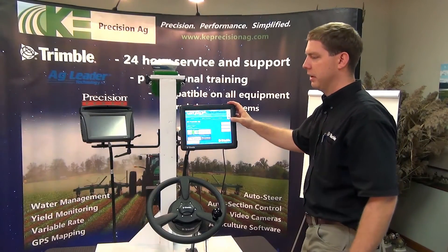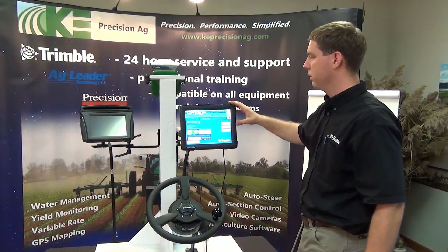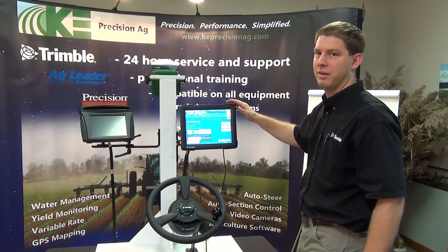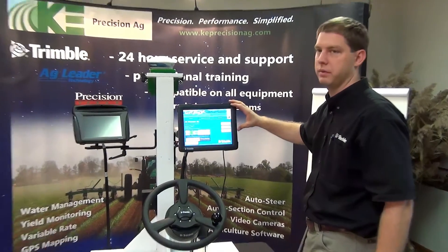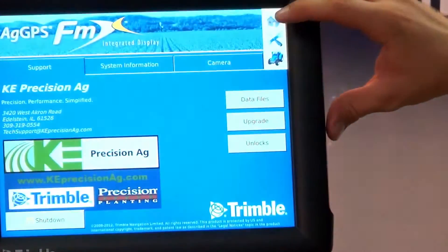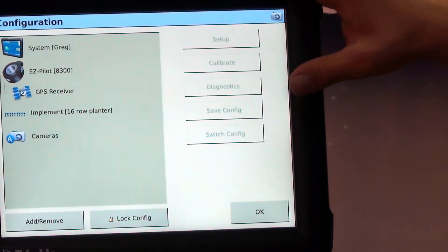Now we're going to explain how to do left-right offsets on the implements. We have to get out of the run screen, come back to our home screen, and go into our configuration menu because we have to be out of the field. It will move us on the guidance line since we're doing an offset with the implement.